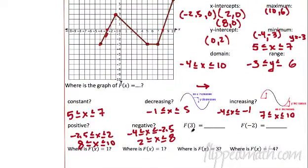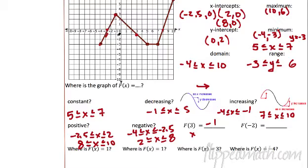f of three — this means x equals three. So we go to our graph: x equals three is right here, the graph is right there. What is the y value? Negative one. f of negative two means the x value is negative two. What's the y value? It's equal to one.